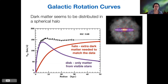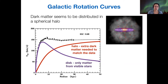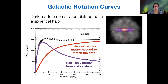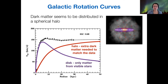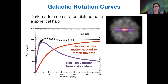The observations for galaxy NGC 3198 are shown here with the black dots — different measurements of speed with error bars shown. The black curve is the best fit to that data. If we only consider the disk, the matter from visible stars for this galaxy, we would get a curve like the purple one here, which looks like the rotation curve for a solar system. But if we include the halo, it makes up the extra dark matter needed to match the data. By putting both of these two curves together, you can reproduce the black curve. This is how we know that dark matter is in a spherical halo.